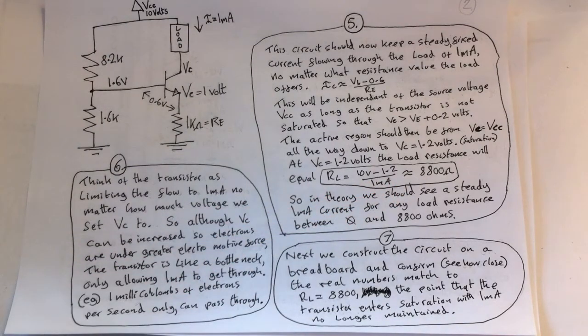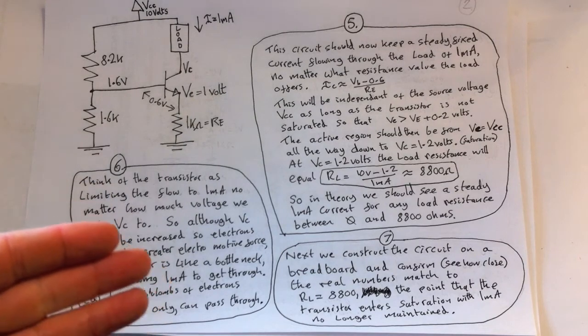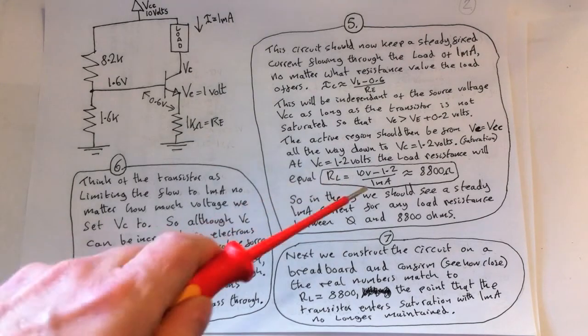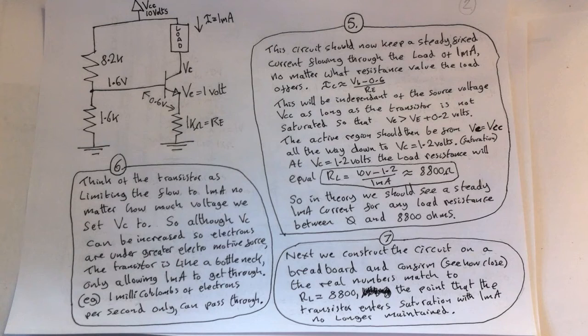So what we're saying is as we get closer to 1.2 volts, the transistor will start to saturate and it'll saturate when that load resistance is approximately 8,800 ohms or 8.8 kilo-ohms. So in theory we should see a steady 1 milliamp current for any load resistance between 0 and 8,800 ohms.